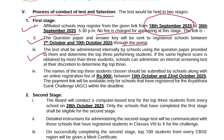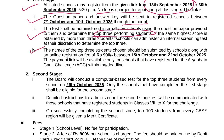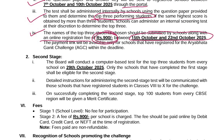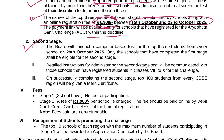The test shall be administered internally by the schools using the question paper provided to them, and they have to select the top 3 performing students. The names of the top 3 students chosen should be submitted by the schools along with an online registration fee of Rs. 900 between 15th and 22nd of October 2025. The payment link will be available only for those schools that have registered within the deadline. For Stage 2, the board will conduct a computer-based test for the top 3 students from every school on 29th of October 2025.